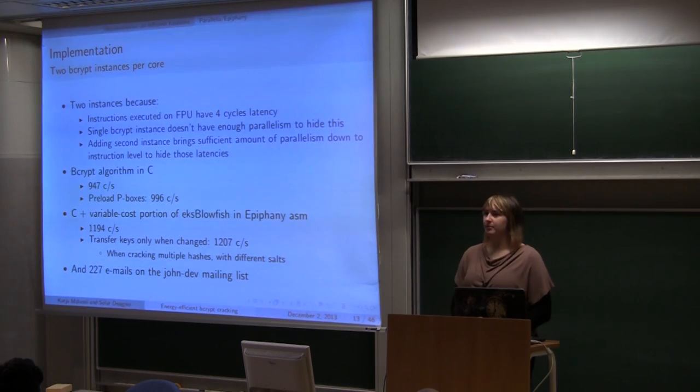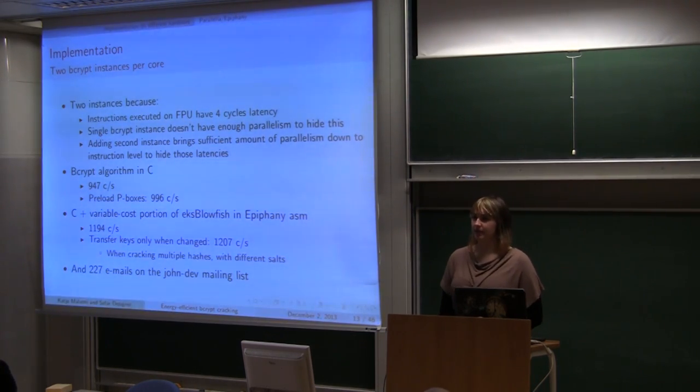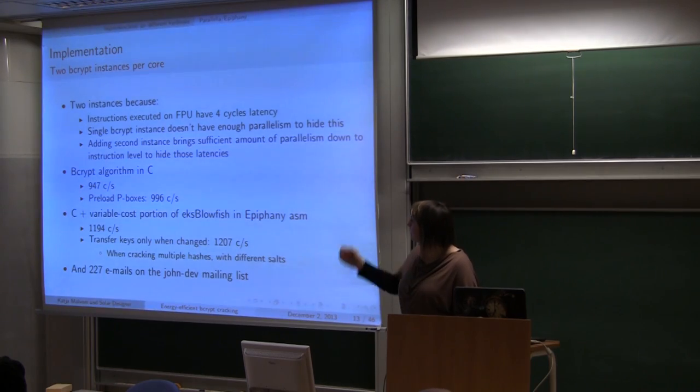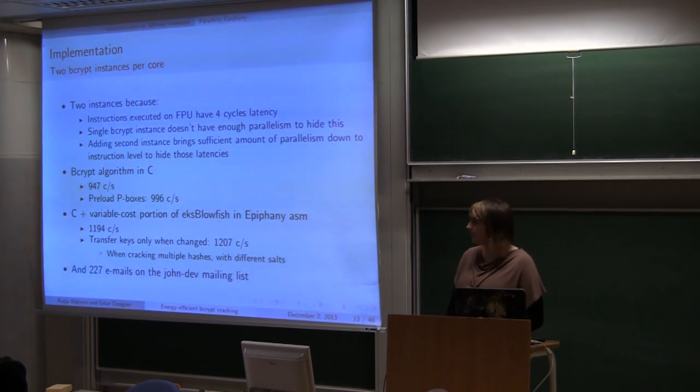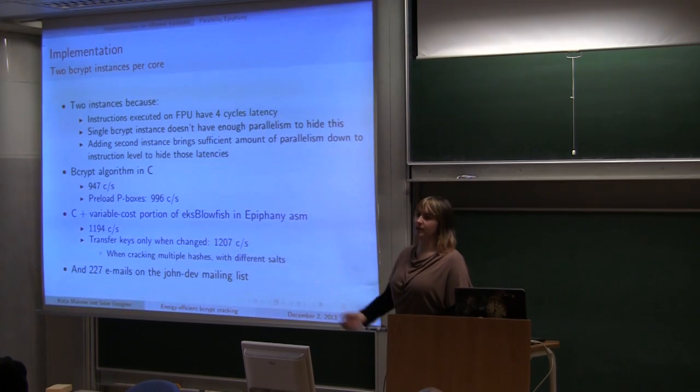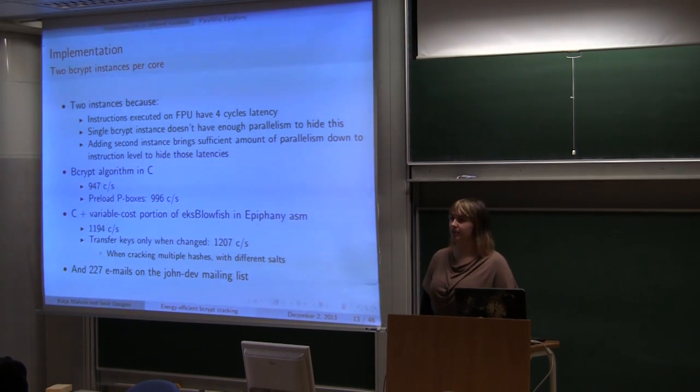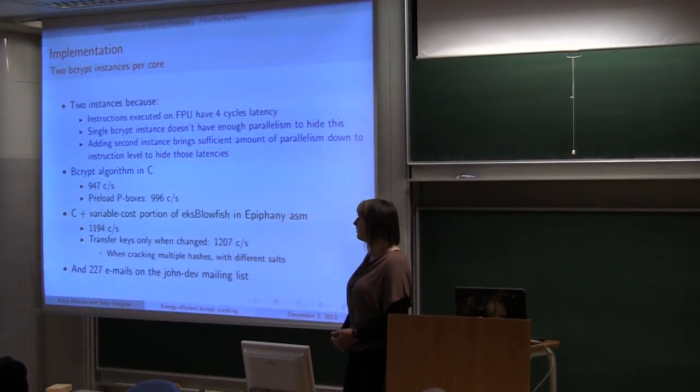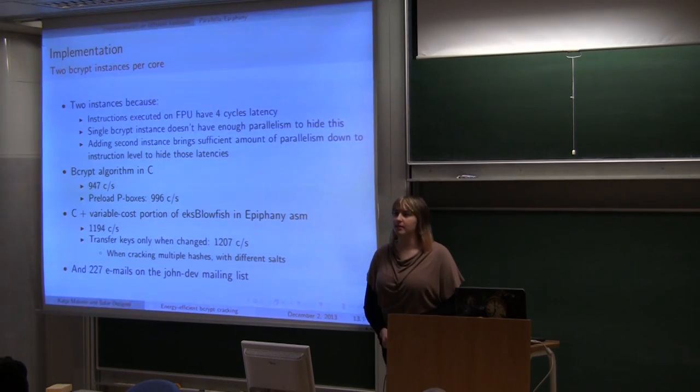Then one Bcrypt instance running on a single core doesn't have enough parallelism to fully use the dual issue architecture. Because there are four cycles latency when using FPU. So we needed to add another Bcrypt instance to bring enough amount of parallelism so that we can actually use dual issue even better. First thing was to do it in C and see how will it, will the compiler be able to do something on its own, but it wasn't really. Performance is less than optimized single instance core.